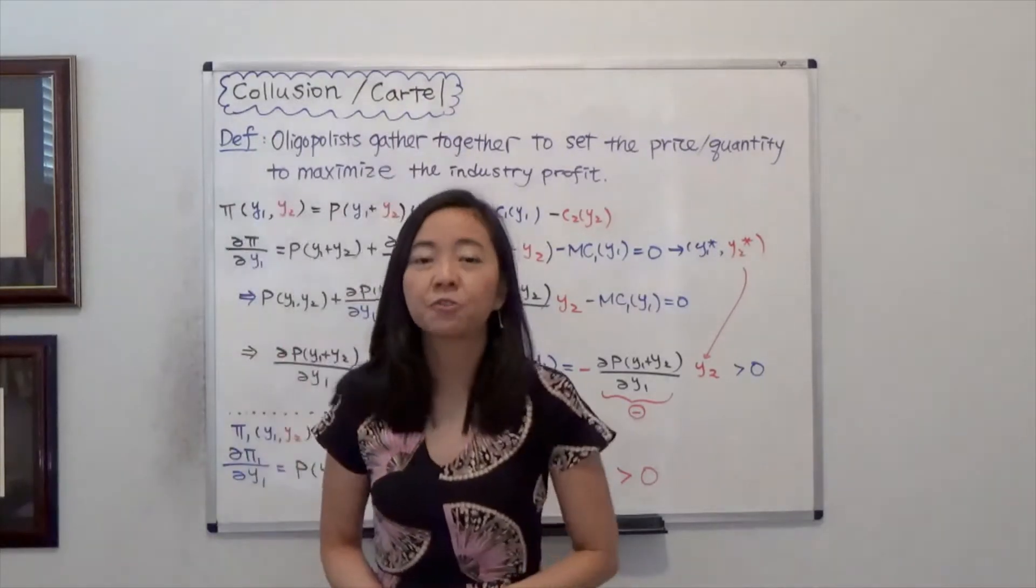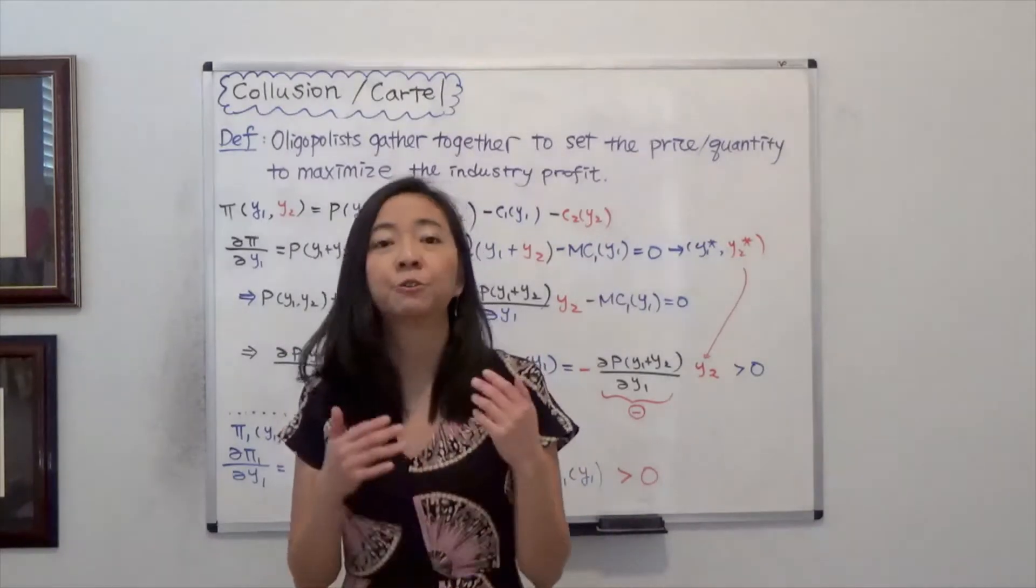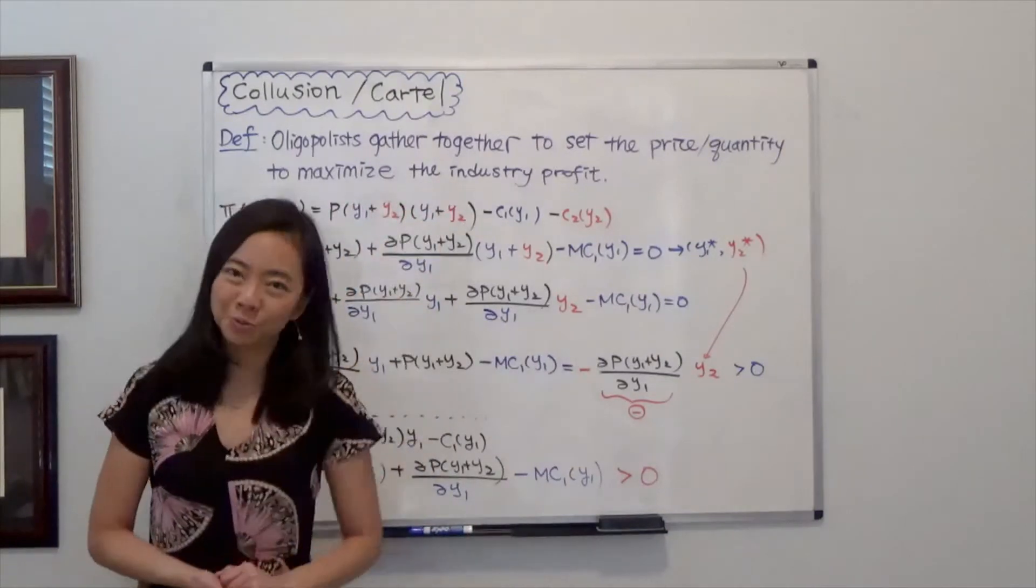The definition of a cartel is a group of oligopolies firms gathering together to fix price and quantity, and the purpose is to maximize the industry profit.